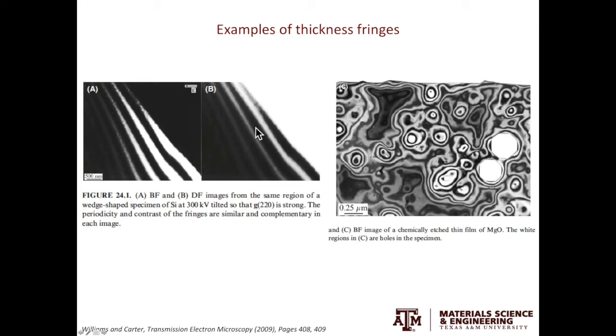The figure on the right is more art than science. It shows the thickness fringes in a chemically-etched thin foil of magnesium oxide. Those are the holes in the specimen. As you go into the specimen, you see thickness fringes.